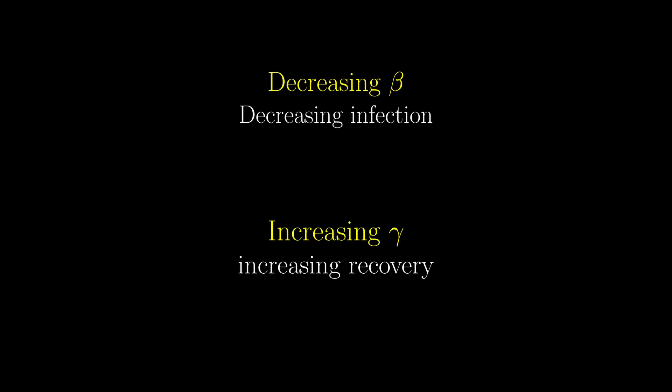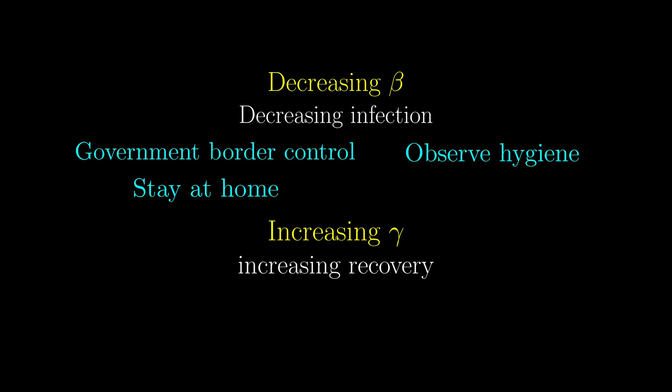For decreasing beta, it can be done by stricter government border control, which not many are doing well. And whether or not you are infected, staying at home as much as possible decreases the chance of infections happening in the first place. Of course, observing personal hygiene is also important in decreasing infection. Developing vaccines can also decrease the value of beta significantly, but this definitely takes quite a bit of time to do.